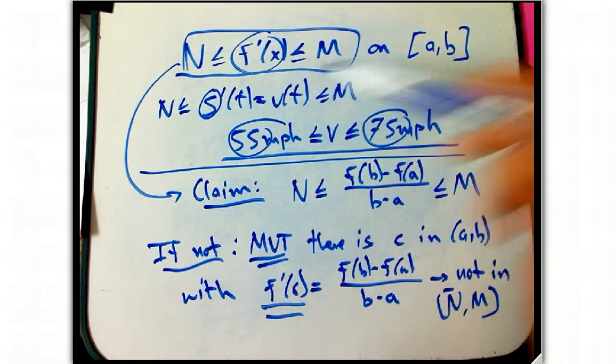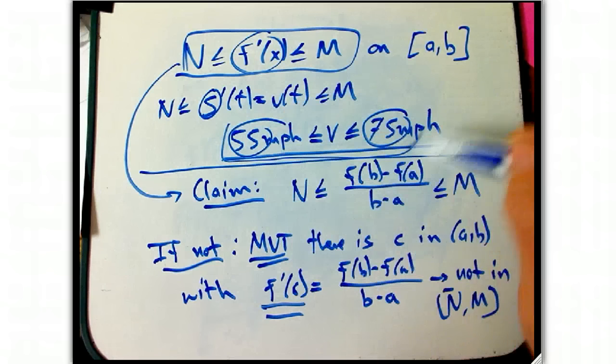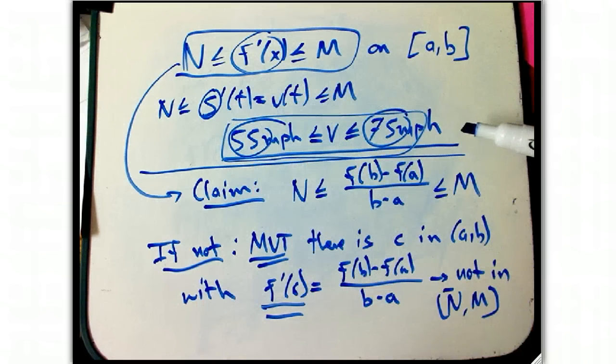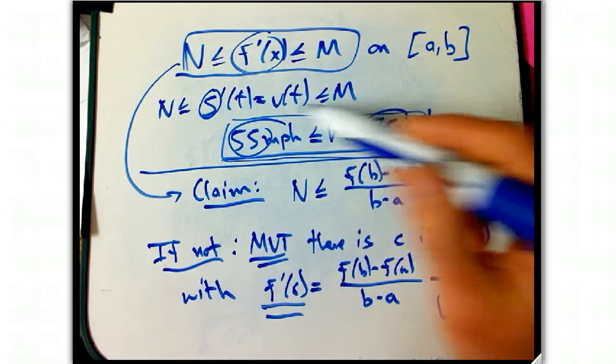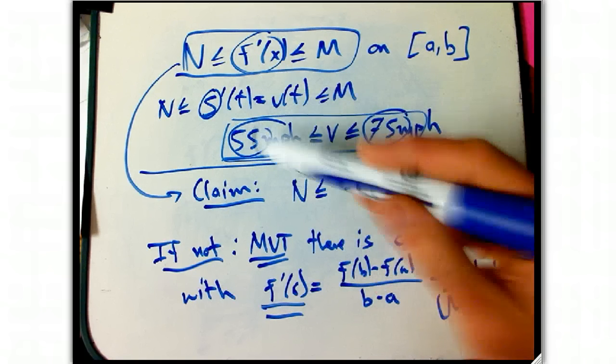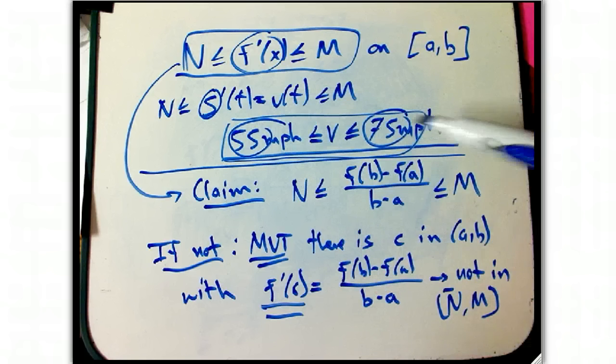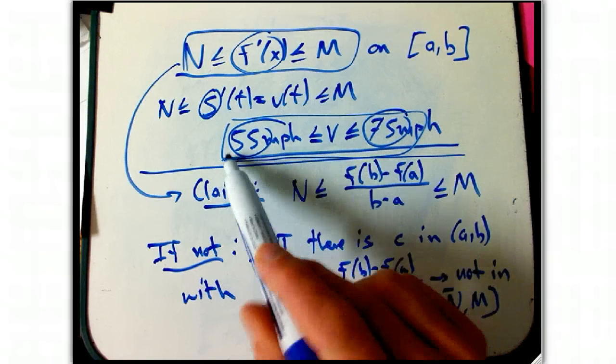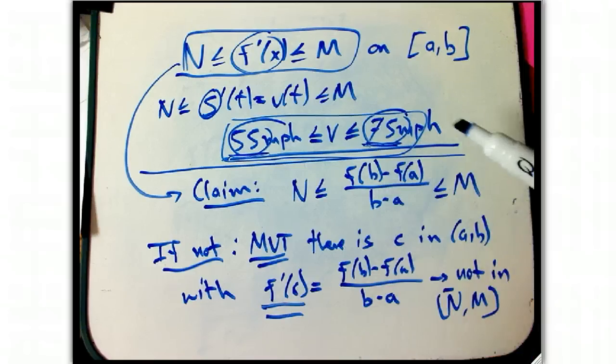So, in other words, in terms of velocities, if your speedometer always reads between 55 and 75 miles per hour, then any average speed calculation, any overall speed calculation you're going to get is also between 55 and 75 miles per hour. You're going to be pretty surprised if somebody says their speedometer was always between 55 and 75, and you realize they went 300 miles in one hour. There's going to be something wrong with that.